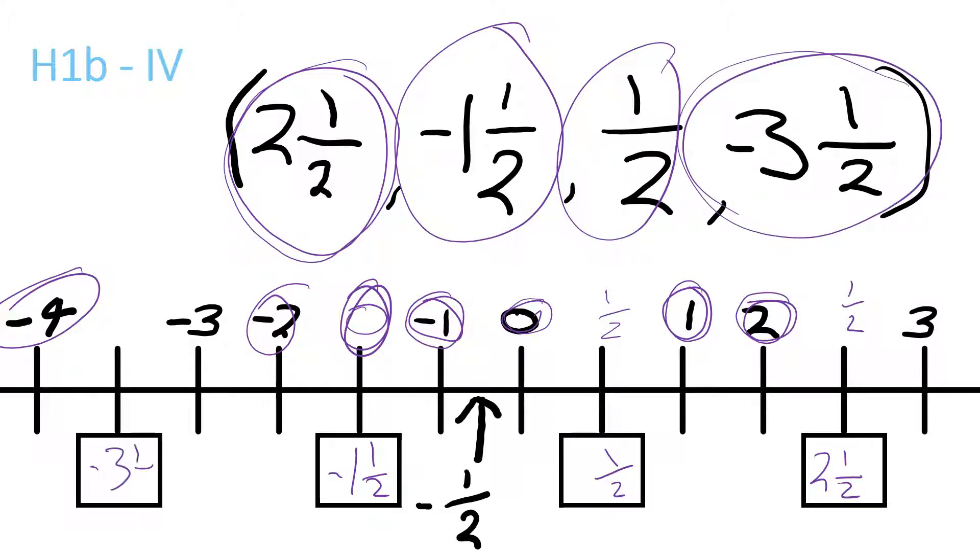go here, negative three and a half, because negative three is here, negative four is there, negative three and a half, so it's halfway.